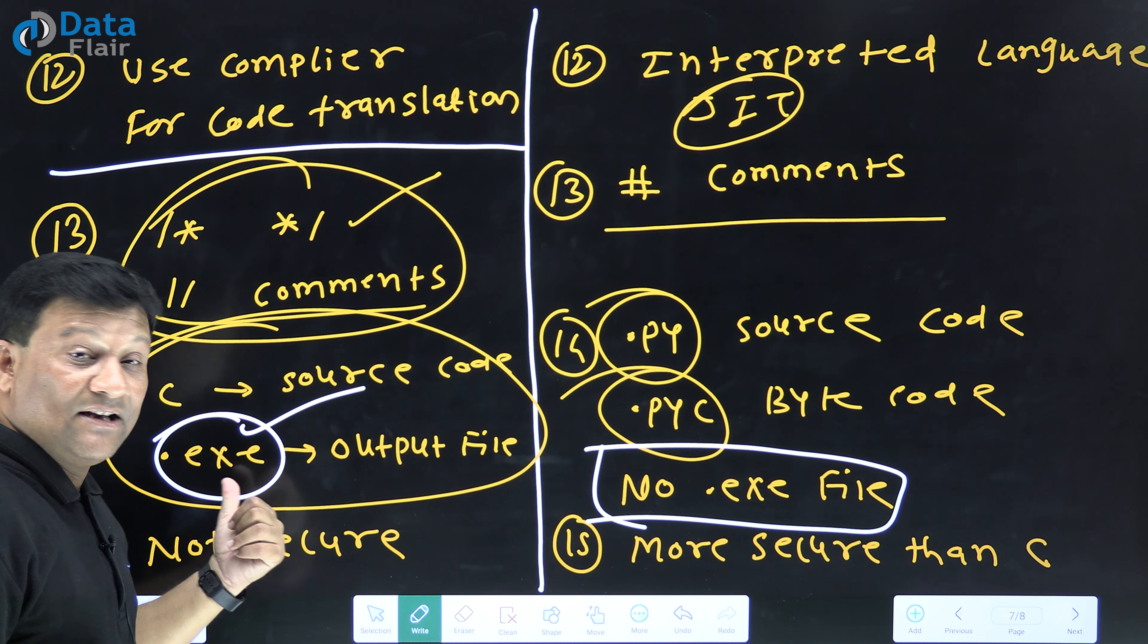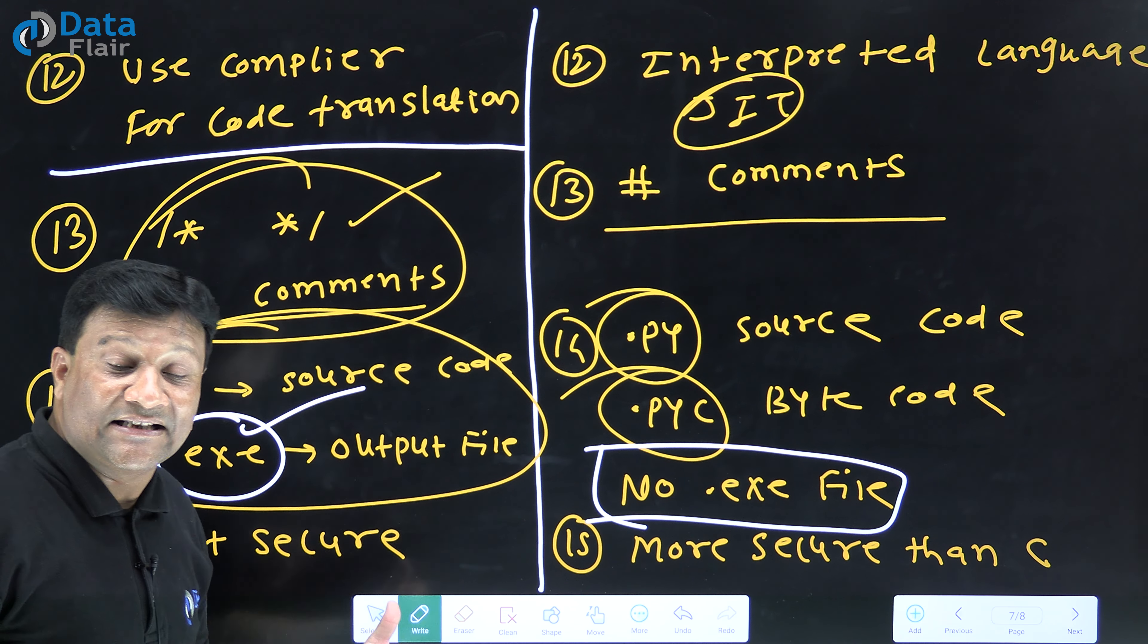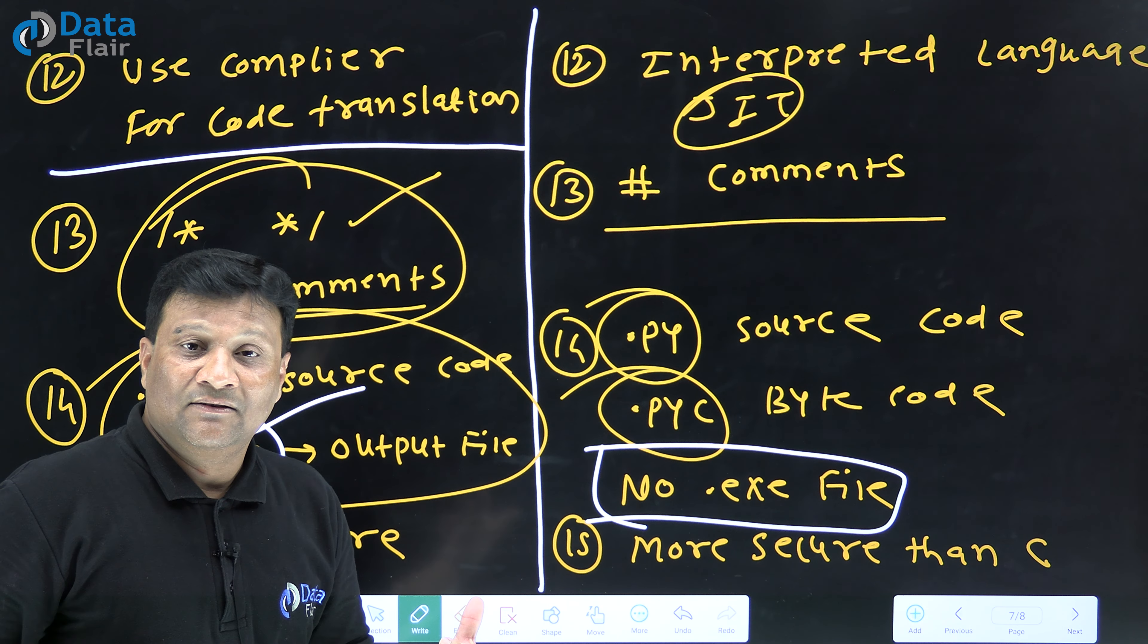But in C, we have .c which contains source code and .exe which contains output file of the program.